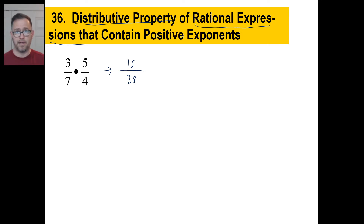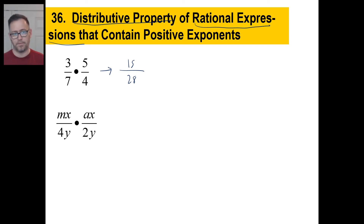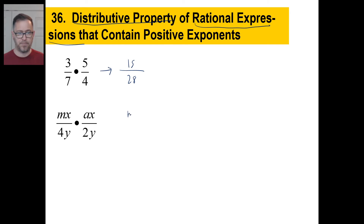If it works with real numbers, then it works for X's and Y's and all that stuff. Look at this — is this too difficult? No, just do the same thing: numerators, denominators, you're done. So MX times AX — you have an M, an A, and X times X is X squared. On the bottom, four times two is eight, and Y times Y is Y squared. That's it. What's the big deal?